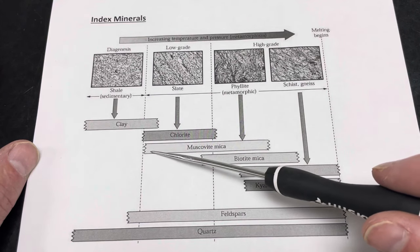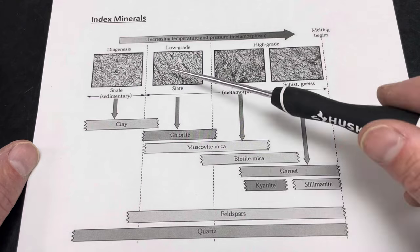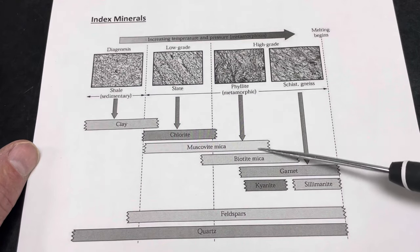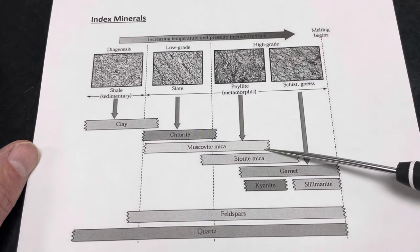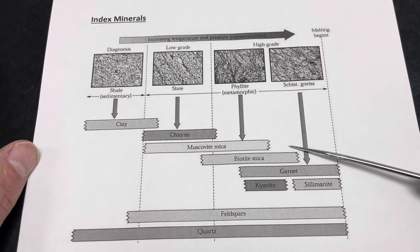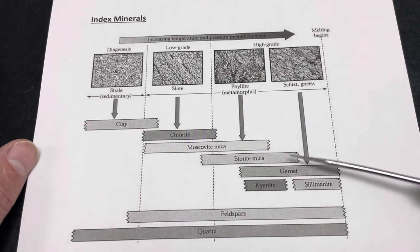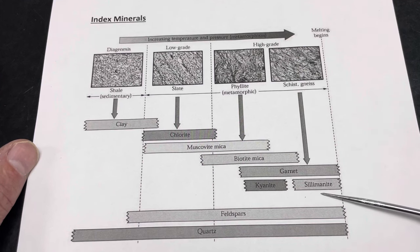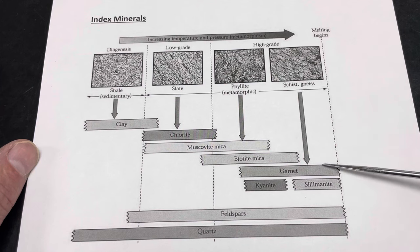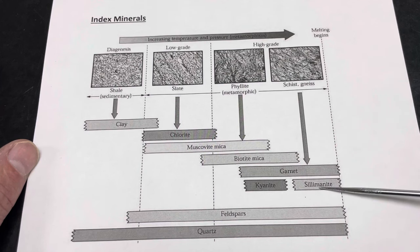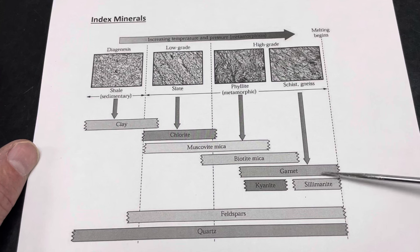Muscovite, for example, is going to be stable at low-grade to intermediate-grade metamorphic conditions. But as you increase the temperatures, muscovite will break down and start to form other minerals using those elements that it's made out of. Notice that garnet and sillimanite are associated with dominantly high-grade metamorphism — these minerals are not going to show up or even form until the temperatures are quite a bit higher.